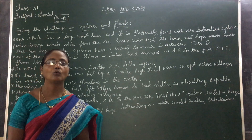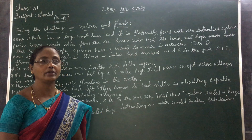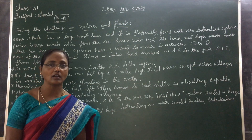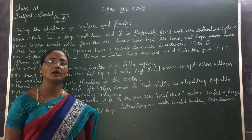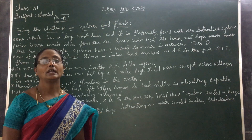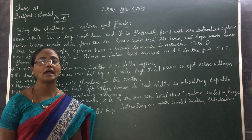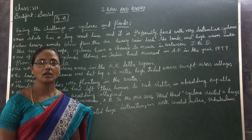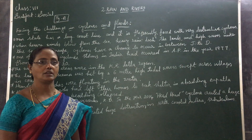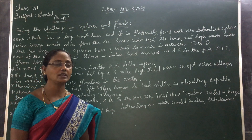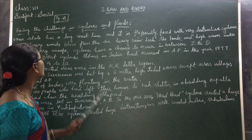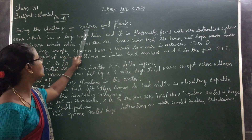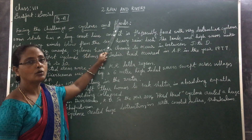Next, vegetation. What is meant by vegetation? Trees, plants and grass are called vegetation. In this lesson we will discuss about facing the challenge in cyclones and floods.